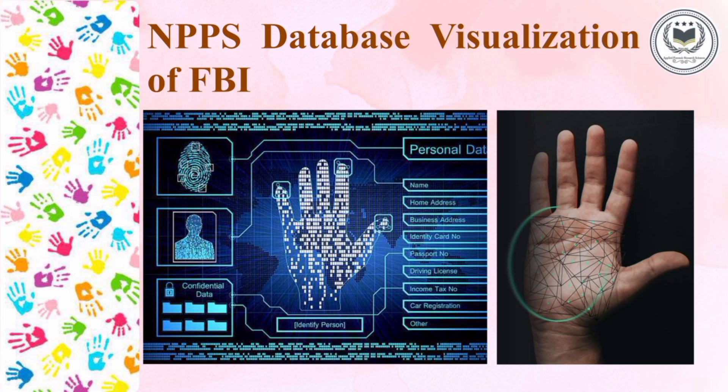The NPPS database of the FBI contains fingerprints, a picture of the person, and personal details like name, home address, business address, identity cards, passport number, driving license, income tax number, and car registration or other identity details. In the next picture, a geographical representation of palm prints is shown, made for easy identification of the features of the palm print.